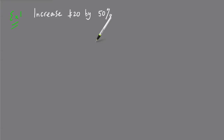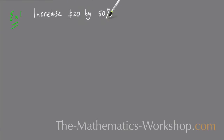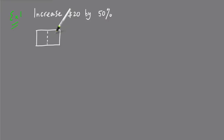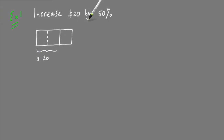Welcome to this lesson on how to calculate percentage increase. There are two types of percentage increase problems. In the first one — increase $20 by 50% — what's really happening is you work out 50% of $20. If this represents the $20, then 50% is half of that, which is $10. Because you're increasing, you add that $10 to the $20, ending up with $30.